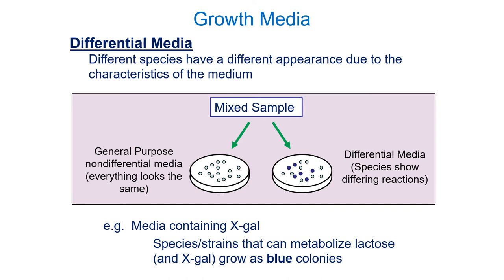Any particular media doesn't have to belong to just one category — we could have complex media that is also selective and differential. In this example, differential media allows us to identify cells capable of breaking down lactose. This media contains a compound called XGAL, very similar in shape to lactose — if something can break down lactose, it will break down XGAL. When XGAL breaks down it produces a blue product. So spreading a mixture of bacteria on these plates will yield white colonies (can't break down lactose) and blue colonies (can break down lactose).